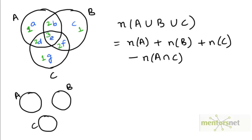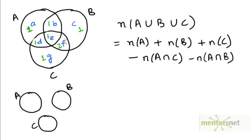Likewise, the elements in region B are being double counted. So let's subtract A intersection B — that reduces the count of region B to one, and also reduces region E's count. Now we have region F left, which is being double counted, so let's subtract B intersection C. That brings the count of region F down to one.